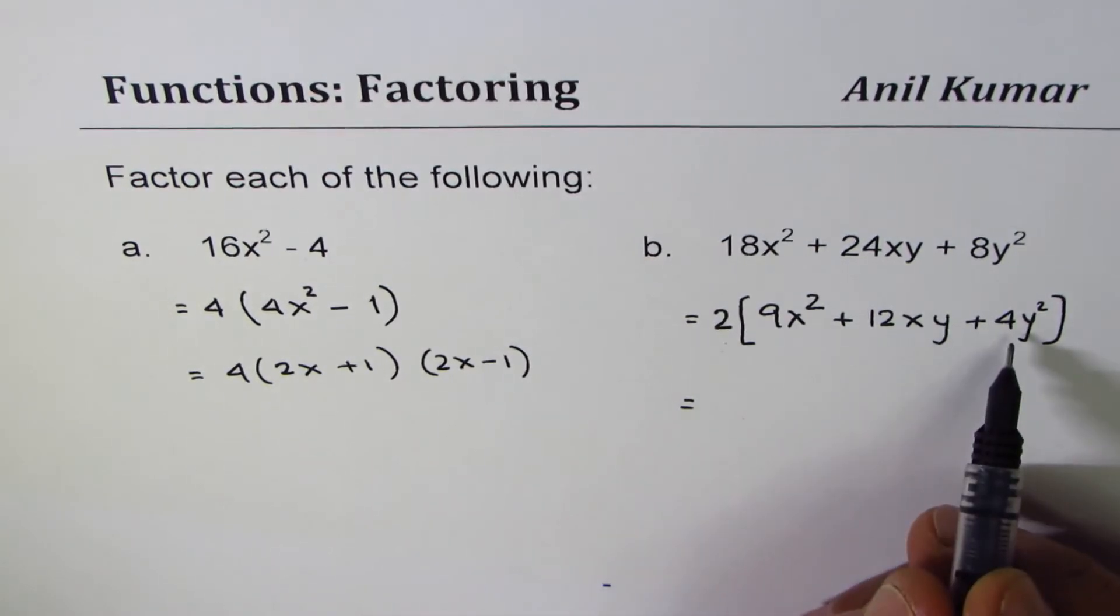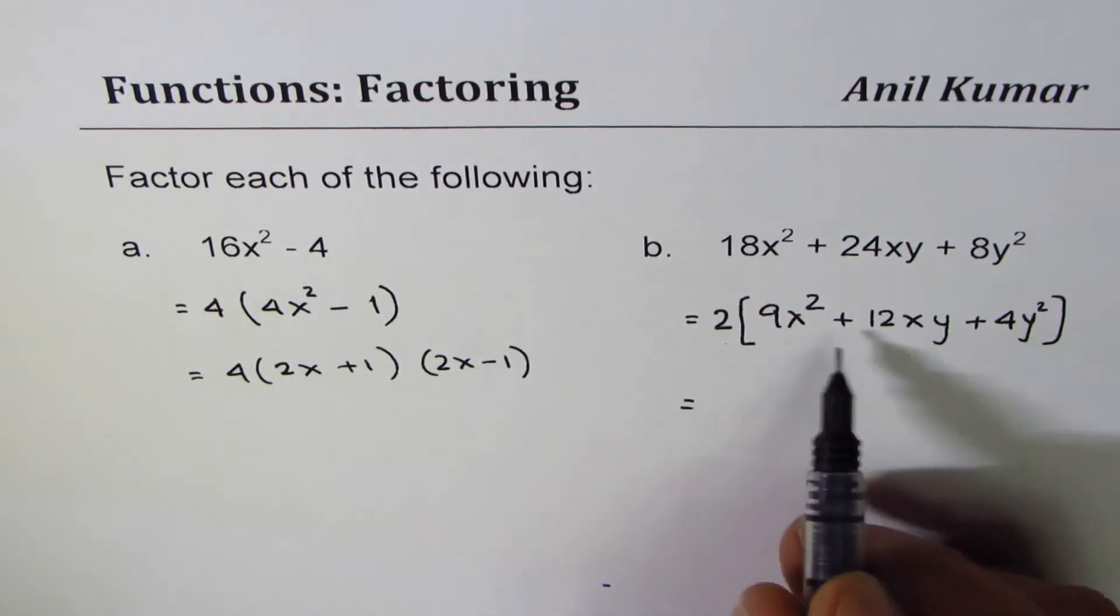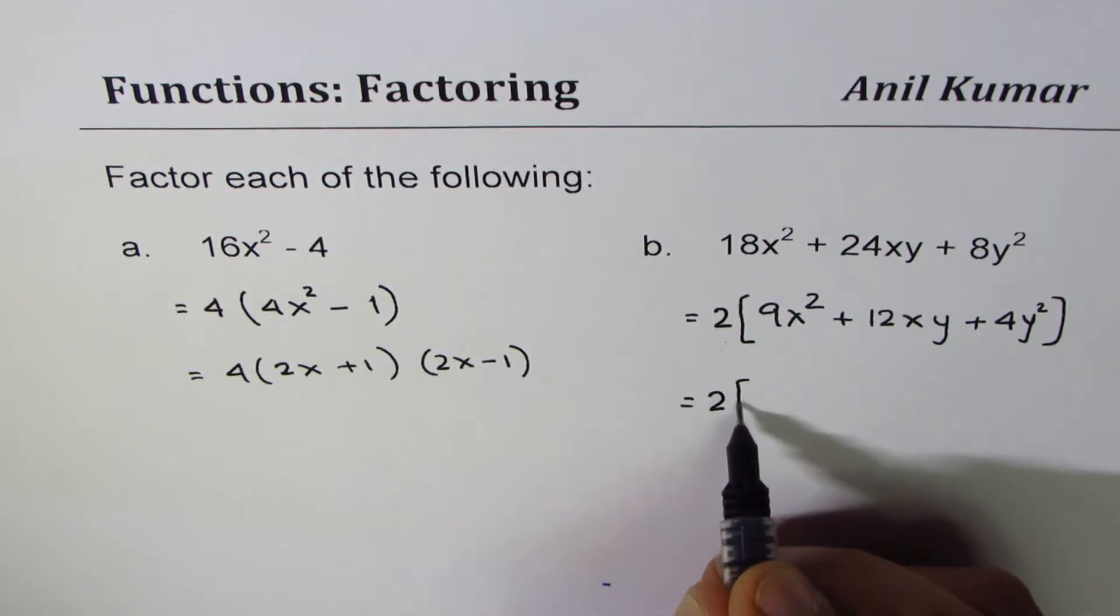Now the trinomial which you get inside the bracket is a perfect square. Let's try to recognize it.